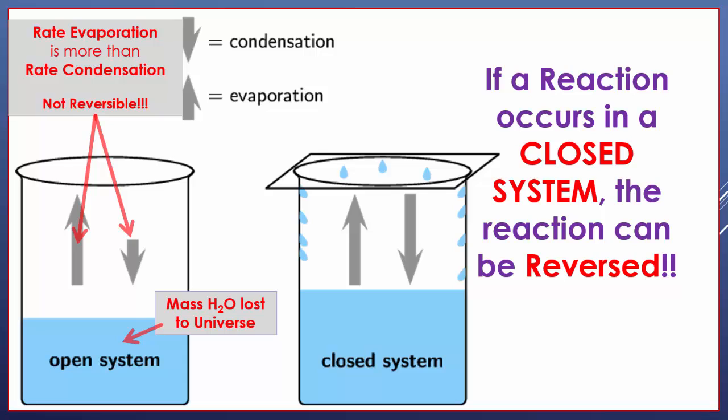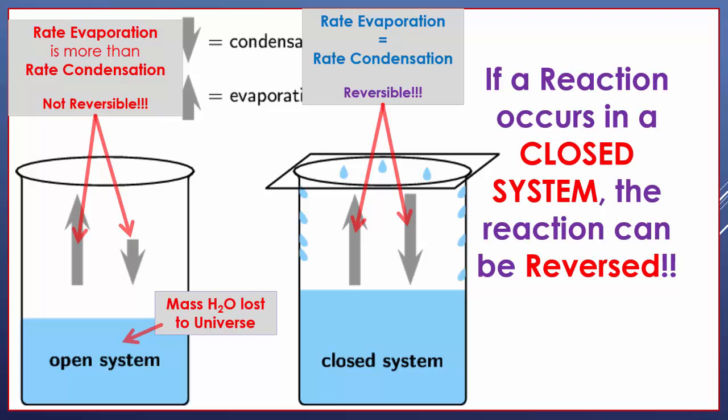In the closed system, the arrows are identical, meaning the rate of evaporation and the rate of condensation are equal. Because there's a closed lid, nothing can evaporate out, so the mass of the water stays constant. If you have a bottle of water with a lid on it, that's a closed system — water turns to water vapor, and that vapor turns back into water. You should put the cap on, otherwise you might lose some microliters!